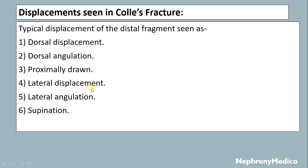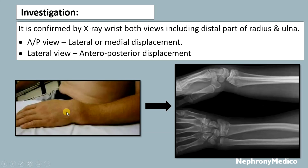Displacements seen in Colles' fracture include dorsal displacement, dorsal angulation, proximal draw, lateral displacement, lateral angulation, and supination. Investigation is confirmed by X-ray of the wrist in both views, including parts of the radius and ulna. On the anteroposterior view there is lateral or medial displacement; on the lateral view there is anteroposterior displacement.